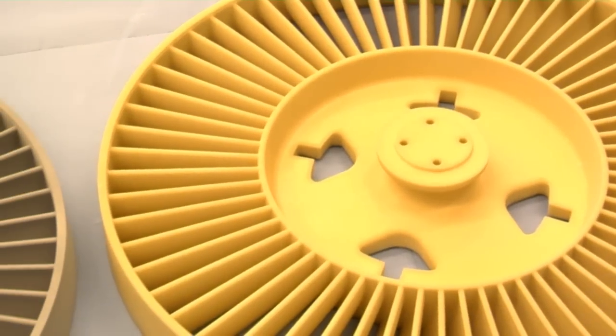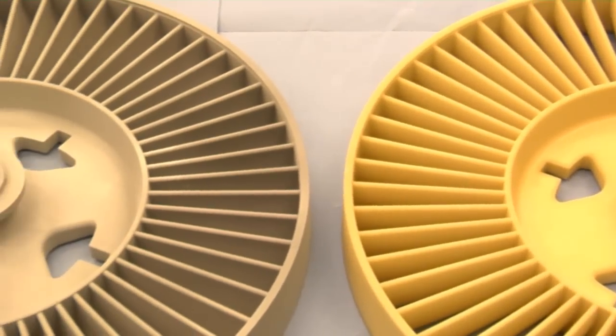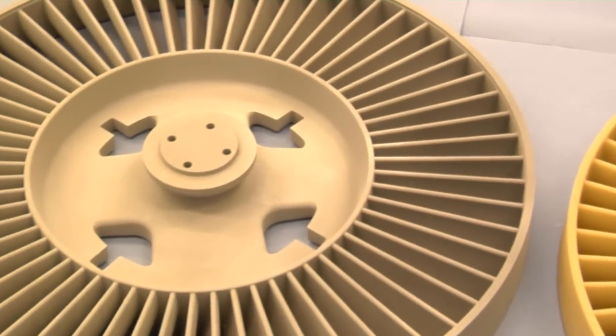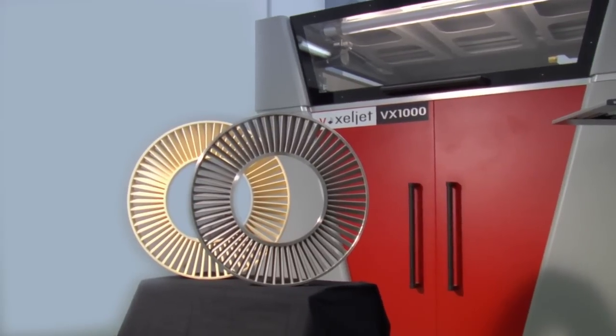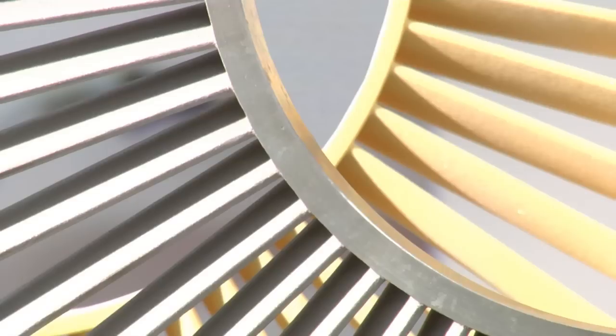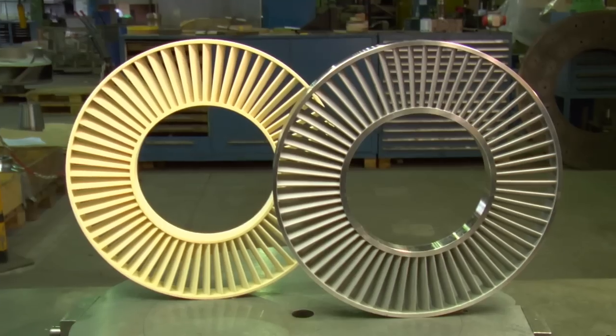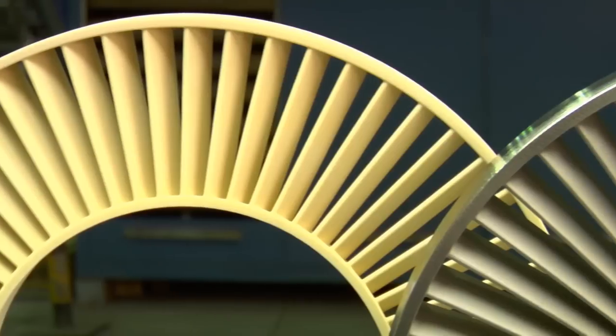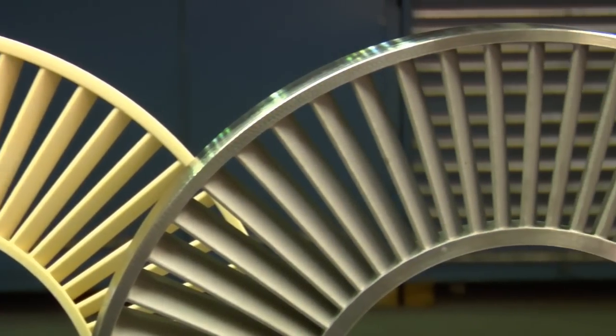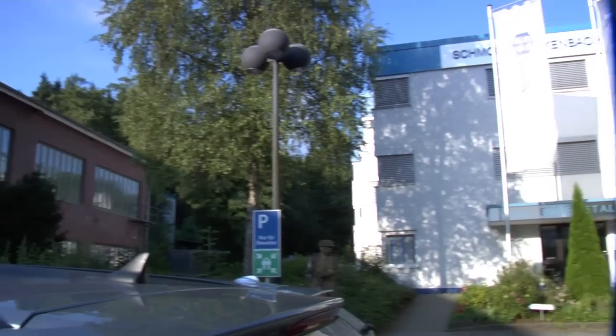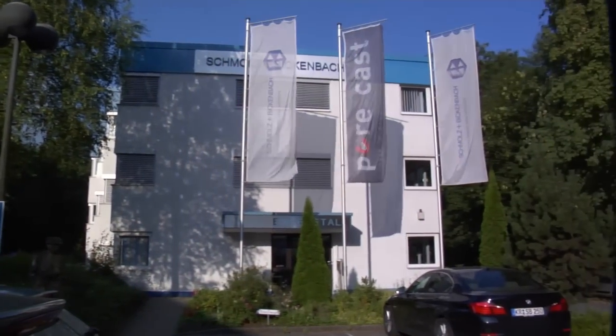The wax-infiltrated models are processed the same way as wax models. The conventional production of complex components such as wheels is very cumbersome and expensive. Voxeljet's 3D printed plastic models provide a cost-effective way of producing installation-ready cast parts using the investment casting process, as is the case here at stainless steel expert Schmaltzen Bickenbach.